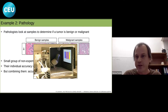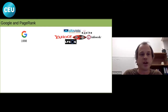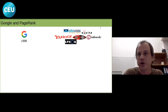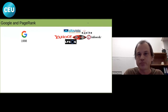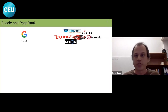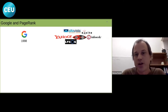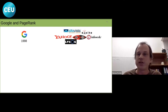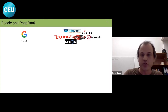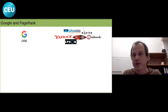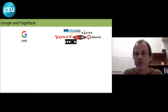Those two examples — guessing the weight of an ox and training pigeons — are far from real-world applications. But the third example is something we use every day that actually works very well: how Google ranks pages. The story of Google starts back in 1998 in the early days of the internet, when there were many competing search engines.